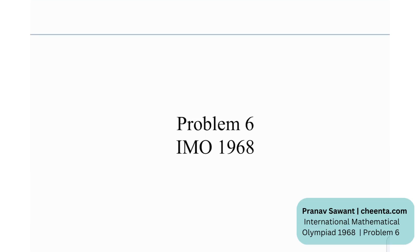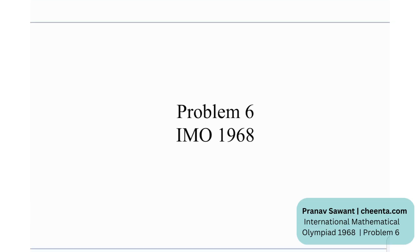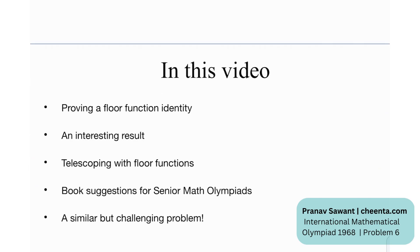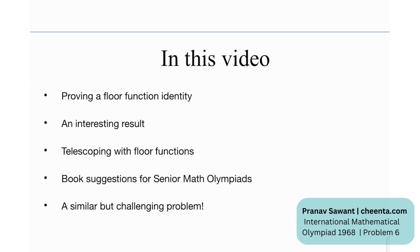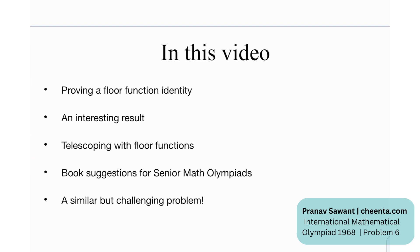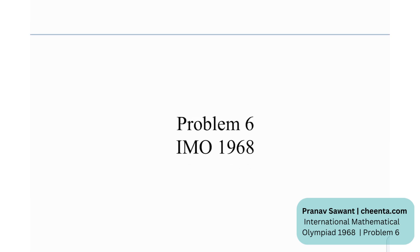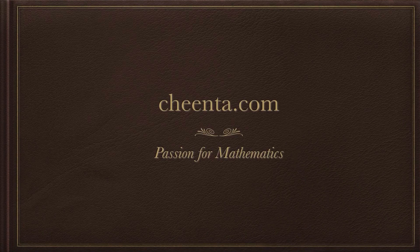This is Problem 6 from the IMO in the year 1968. In this video we're going to prove a floor function identity, look at an interesting result, learn how to telescope with floor functions, and there's a little bit of telescoping series involved as well. This video is sponsored by Chinta.com.